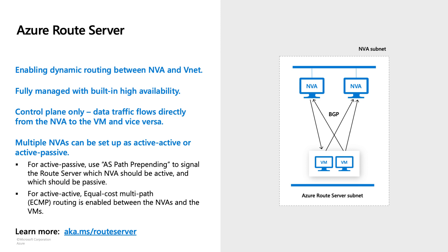The last service I want to talk about is Azure Route Server, which we launched in September. It's a fairly new service. Azure Route Server enables dynamic routing between your NVA and your VNet. Route Server gets all the routes in your VNet and sends those routes to the NVA; the NVA in return sends its own routing table routes to the Route Server, which then programs those NVA routes into the VMs' routing table. Route Server is a managed service — if you deploy it in an availability zone region, we place the Route Server VMs in different AZs, so you get zone redundancy by default with no configuration needed.